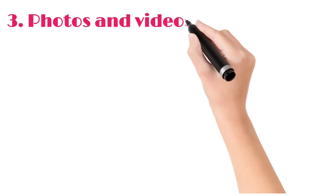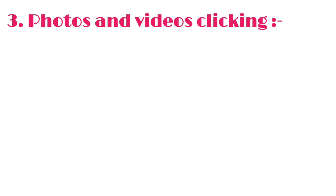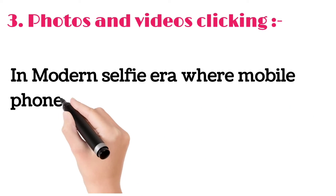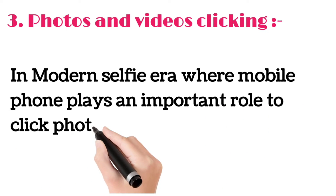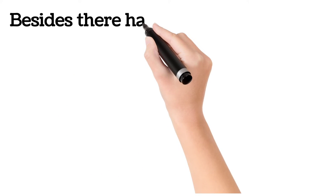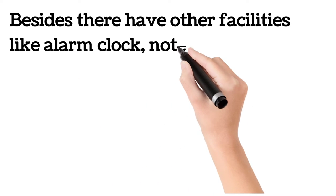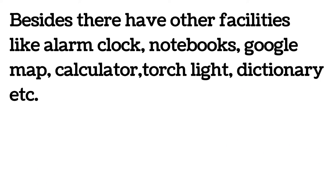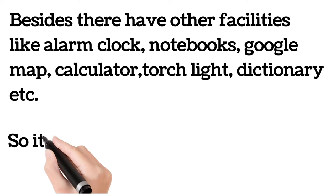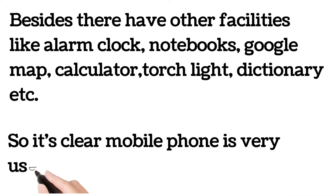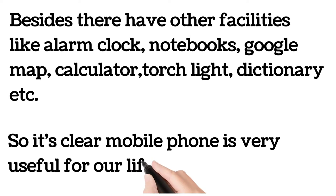Photos and videos clicking: In this modern selfie era, mobile phone plays an important role in clicking photos and making videos. Besides, there are other facilities like alarm clock, notebooks, Google Maps, calculator, torchlight, dictionary, etc. So it's clear mobile phone is very useful for our life.